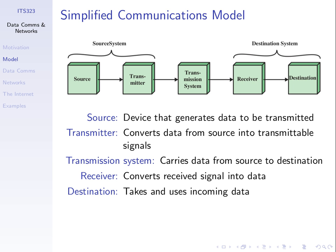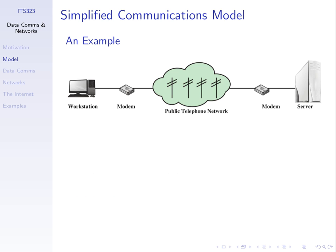So communications has five basic components: generate data, convert it to signals by transmitting, send signals across the transmission system, the receiver converts signals back to data, and the destination receives and uses the data. An example: my laptop is connected to this wireless LAN access point on the wall. When I want to send data — say, access a website — my web browser generates data to send when I click on a link, then sends it through the operating system to the wireless LAN chip inside my laptop.